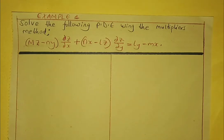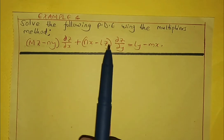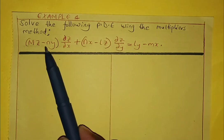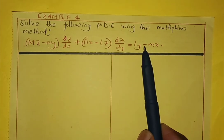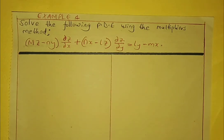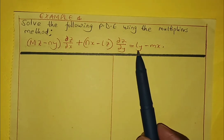Hello everyone. In this video we are going to learn how to solve partial differential equations. There are many ways of solving partial differential equations, but in this example we are going to use the multipliers method to solve the following partial differential equation. We are going to apply the multipliers method to get its solution. The first thing to do is to express our equation in auxiliary form.